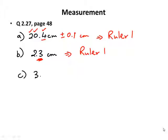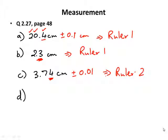For measurement C — 3.74 centimeters — the uncertainty is not in the first decimal place but in the second decimal place, so the error is ±0.01. The ruler that provides that degree of accuracy is ruler 2, where the first decimal place is certain and the second is uncertain. For measurement D — 32 centimeters — the uncertainty is ±1, so the ruler that allows that accuracy is ruler 3.